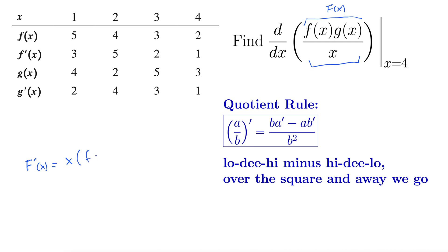Okay so f of x g of x prime minus high f of x times g of x d low. Well derivative of low is simply 1 over the square and away we go all over x squared.